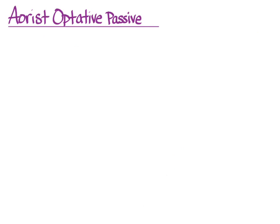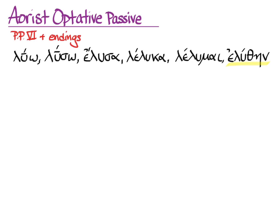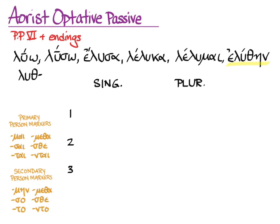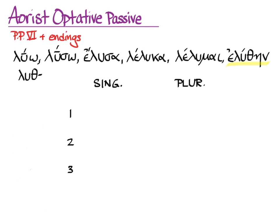To form the aorist optative passive, you'll need principal part six, as for all aorist passive, and some endings. That will be from eluthane — we take off the -aine and the augment to form our stem because we're not indicative. For the endings, we can't look to the passive person markers because everything aorist and passive looks active. So we'll have endings with epsilons that start to look quite aorist and passive, and the optative iota, plus some quite active-looking endings.